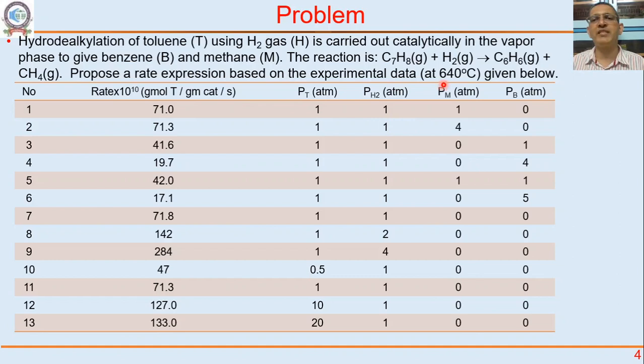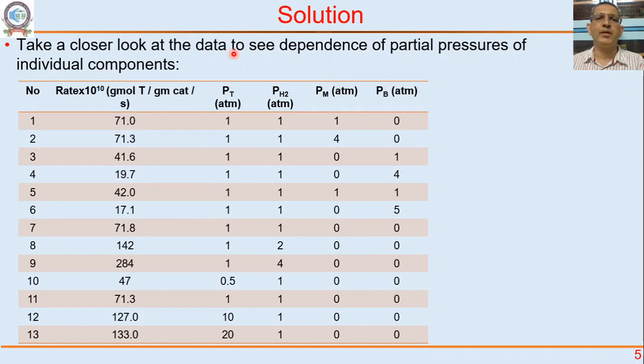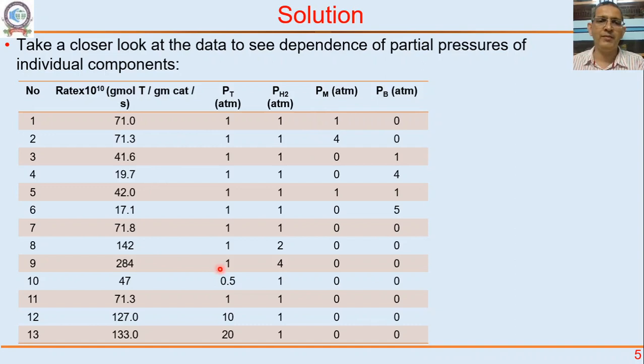What I want you to do is propose a rate expression based on this experimental data — pause the video and do it for yourself. Let us take a closer look at the data and see the dependence of rate on partial pressure of individual components: toluene, hydrogen, methane, and benzene. Let us see how the rate depends on each component's partial pressure. Can you identify it? Pause the video and do that for yourself.